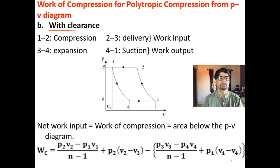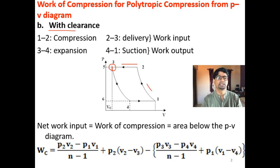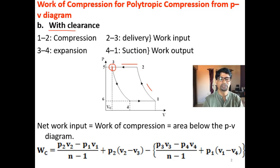In the PV diagram, 1 to 2 is the compression, 2 to 3 is the delivery. But you can see point 3 is not touching the axis — there is a small gap. A small volume of space is left out at the end of delivery and compression so that some compressed air occupies this space.